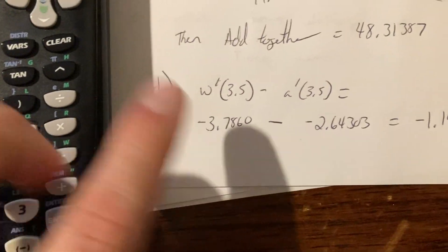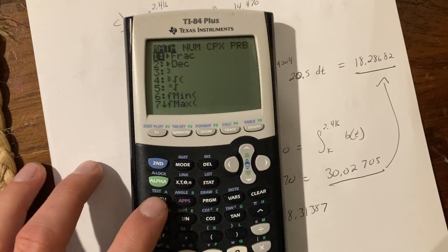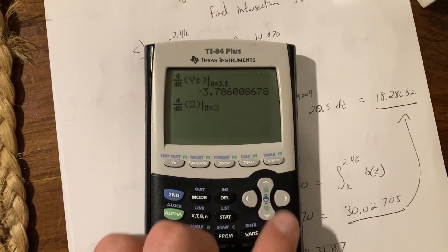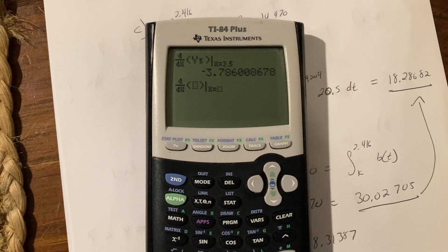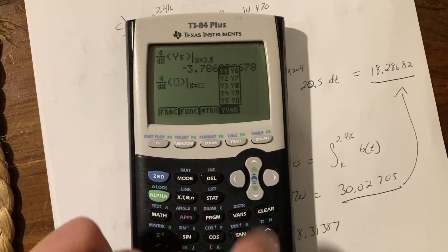And the X value that I'm supposed to punch in is 3.5. And that gives me the negative 3.786 that I'm supposed to. Do the same thing, math 8 with respect to X, and I'm supposed to find the A of T, which I've saved in Y1. So there it is.